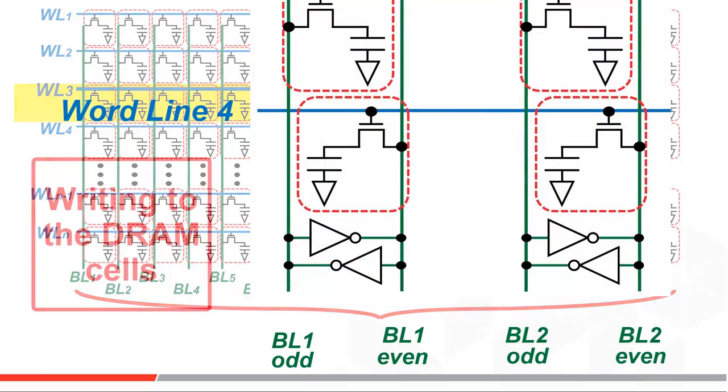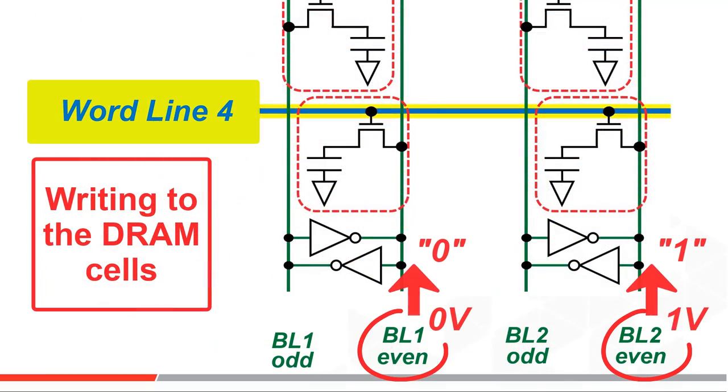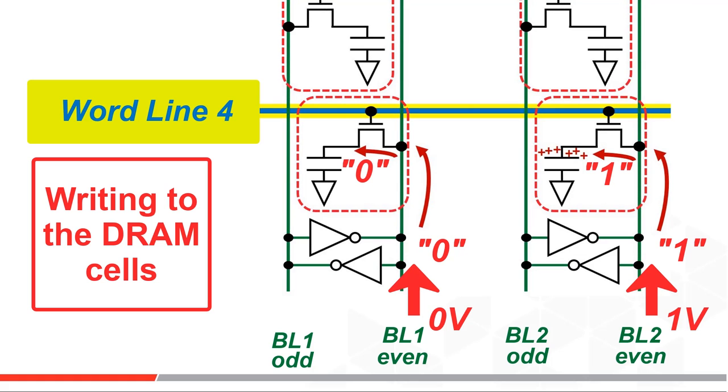Now let's look at a write instruction. For a write instruction, the targeted bit lines are driven high or low depending on if you are writing ones or zeros, and the capacitors inside the selected memory cells are moved to those written values.